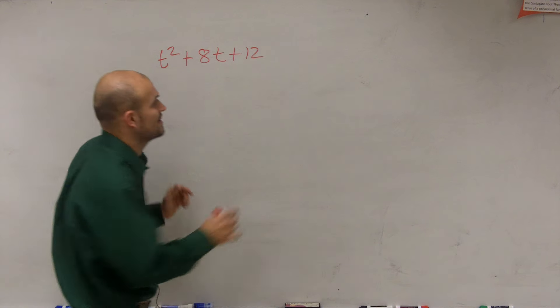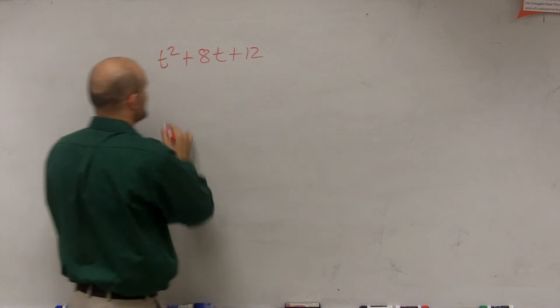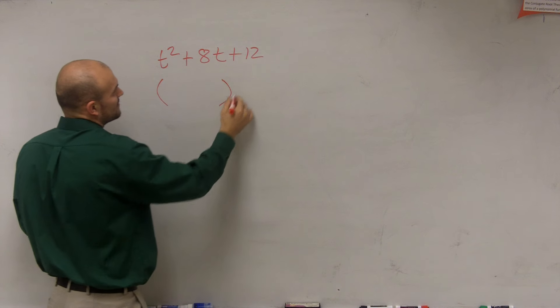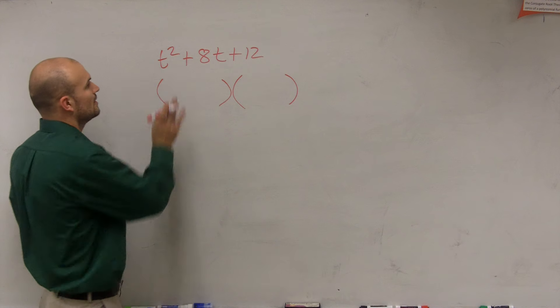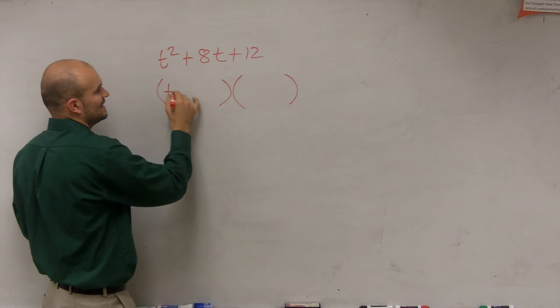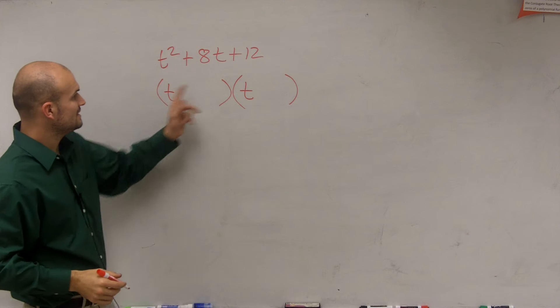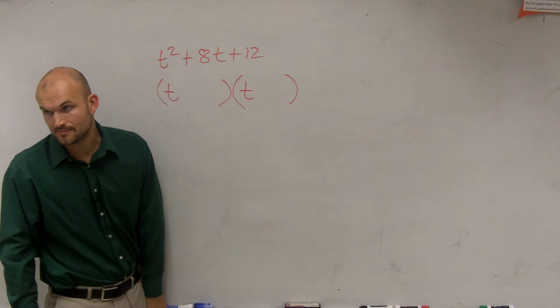So what I want to do is I want to write this as a product. And do you guys remember multiplying binomials? Foil? OK, we're going to have to go back and redo that. What I want you guys to do is this is a factor. And what we're going to do is we're going to take two binomials. Well, if we know we're going to have t times t. t times t is going to give us t squared, right? Yep.